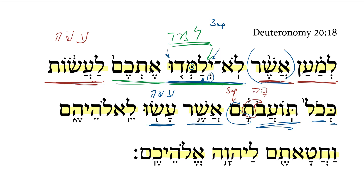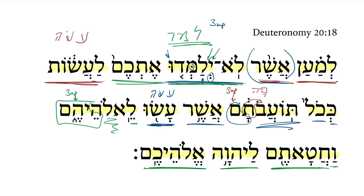According to all of the abominations which they do to their gods — there's the 3MP pronominal suffix on a plural noun. Finally we get 'and you sin against the Lord your God.' There's a 2MP pronominal suffix and the 2MP verb — notice the 'tem' ending. The verbal root is chet-tet-aleph: 'and you sin.' So the desire in the previous verse to devote them to destruction is so that they will not teach you to do all of their abominations, and therefore sin against the Lord your God.